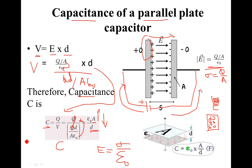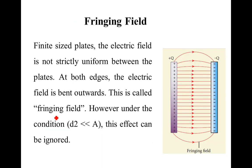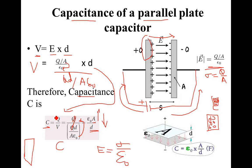Intuitively, when you have a larger area of plate, you can fit a larger number of charges — it can store a larger amount of charge, so capacitance increases. That is why capacitance is directly proportional to area. This is the capacitance of a parallel plate capacitor.